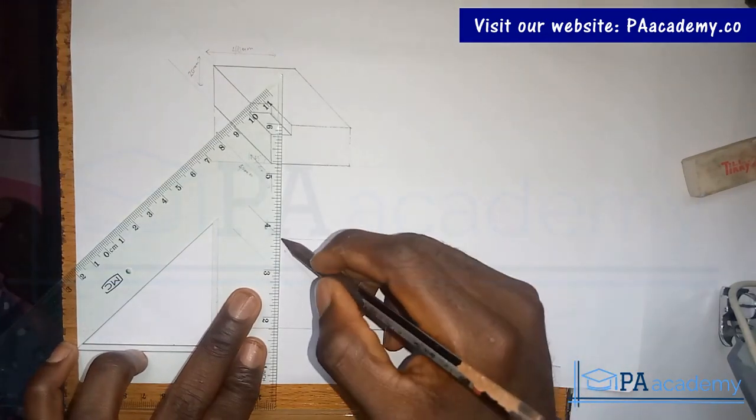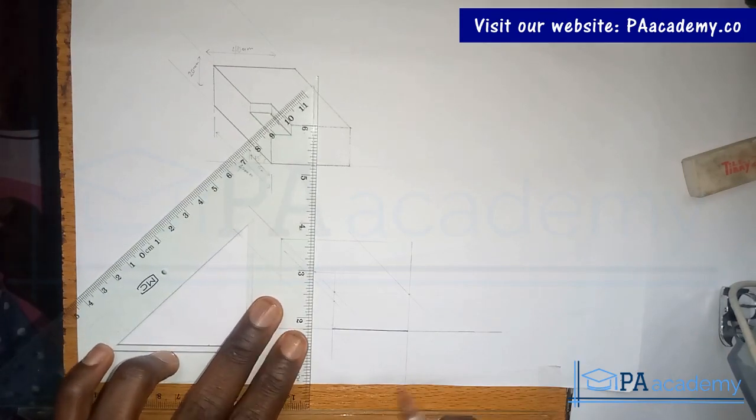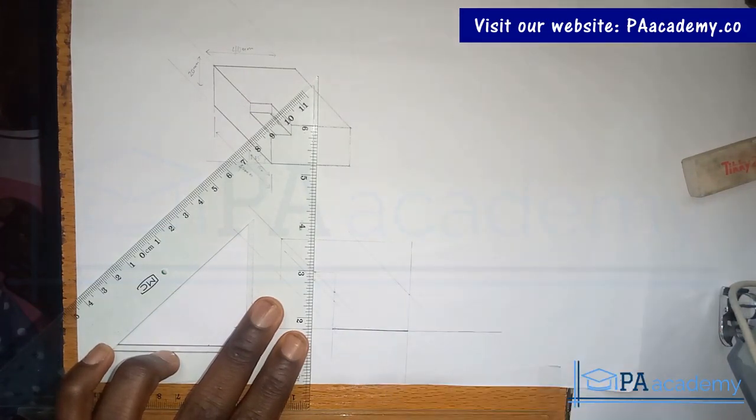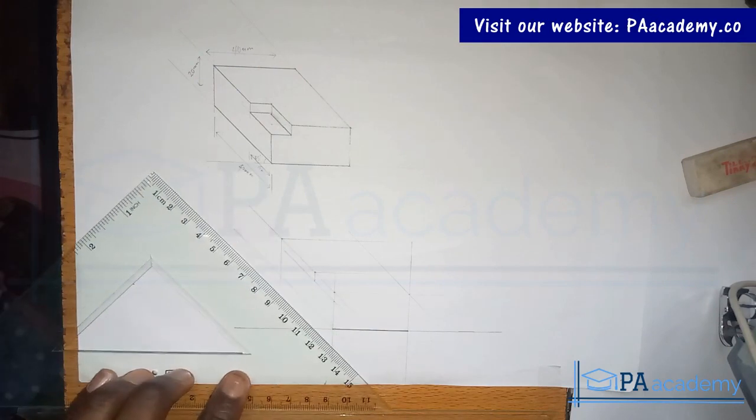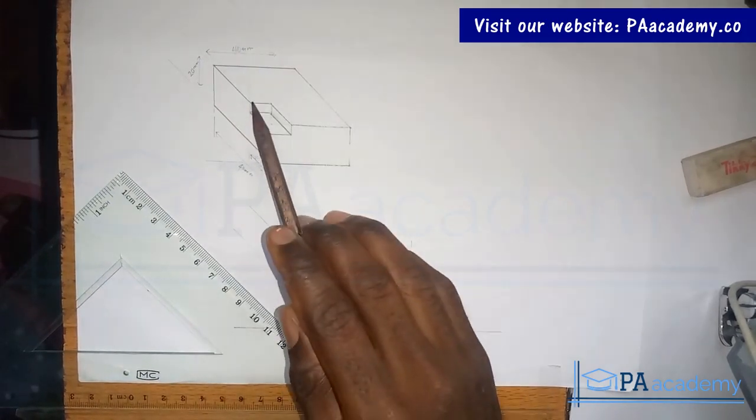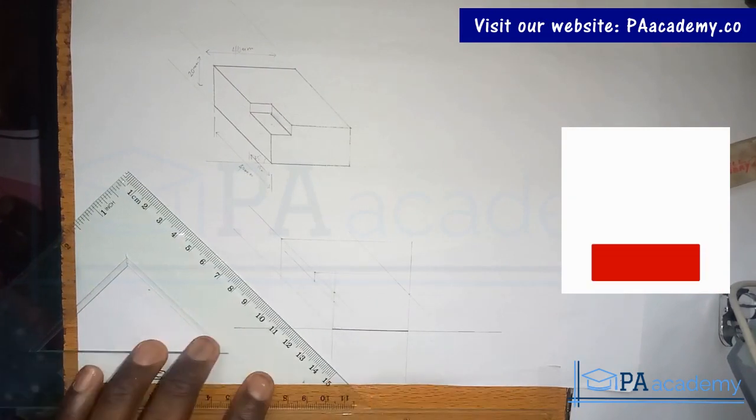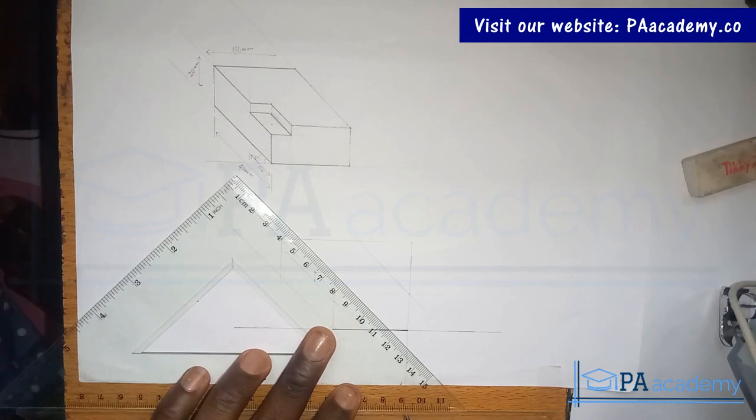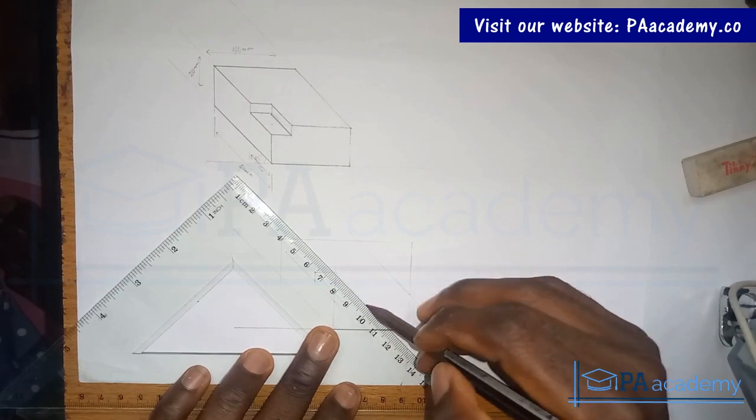We'll do 45 degrees from here. Now we want to draw the slide section. This one that is coming down, from here to here is 1 centimeter, that's 10mm. From here to this slide has made it 1mm, so from that point of intersection, I'm still using faint line.